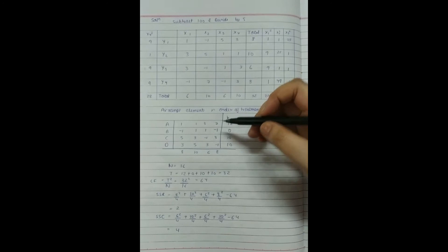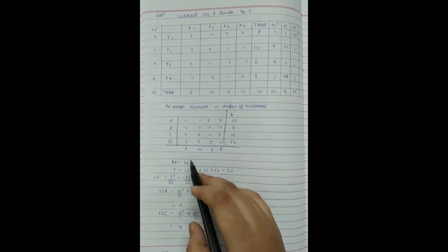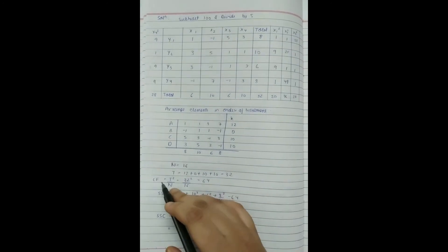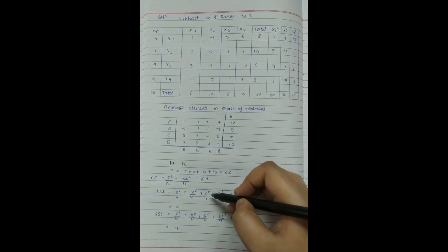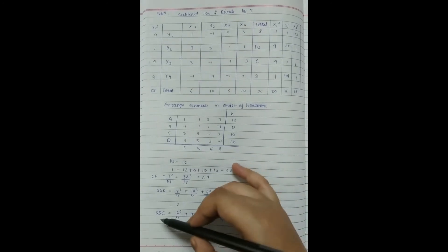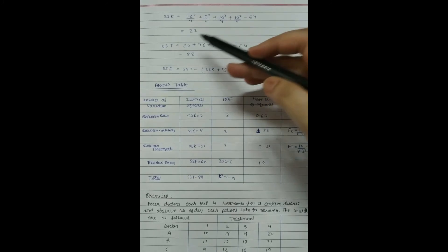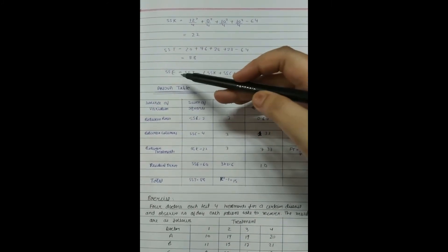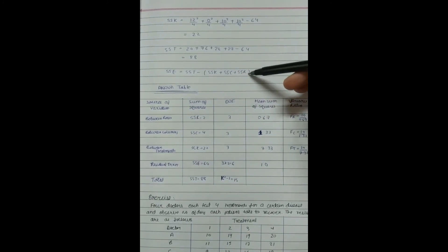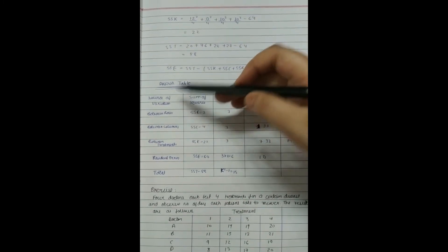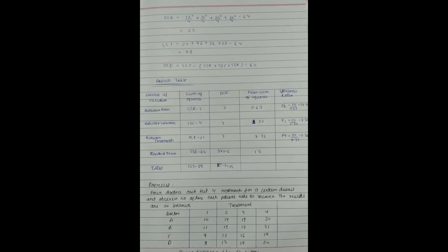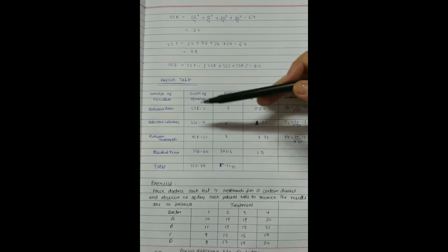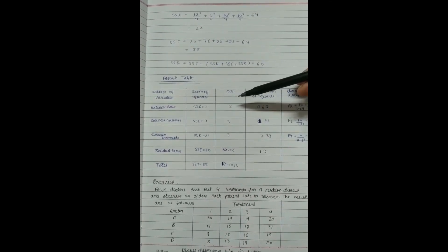The total number of observations n = 16, and the total of all observations T = 32. The correction factor T²/n = 64. The row sum of squares SSR = (8²+10²+6²+8²)/4 − 64 = 2. The column sum of squares SSC = 4. The treatment sum of squares SSK = 22, giving SST = 88. The error sum of squares SSE = SST − (SSK + SSC + SSR) = 60. We then fill in the ANOVA table with sources of variation, sum of squares, degrees of freedom, mean sum of squares, and variance ratio, ensuring all F ratios are greater than 1, and state our conclusion.